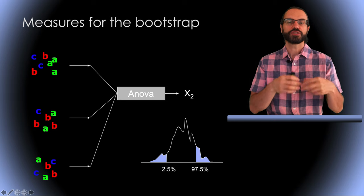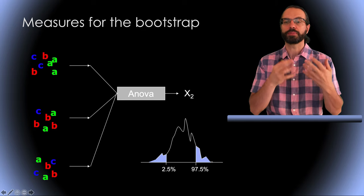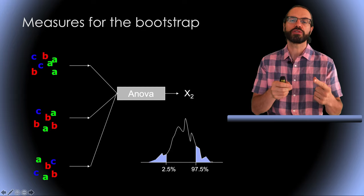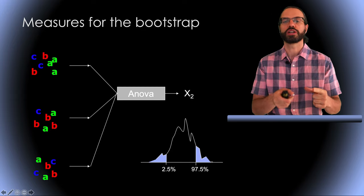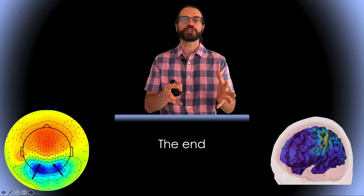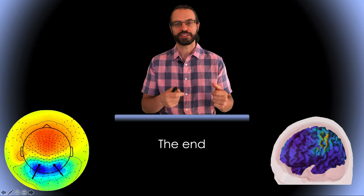When we have more than two groups, we can use Bootstrap. As for the t-test, we compare the ANOVA for the original values to the ANOVA Bootstrap distribution. So this is the end of this presentation. I want to thank you for your attention and I'll see you in the next video.